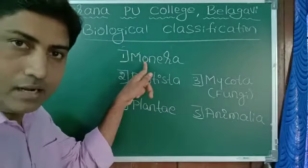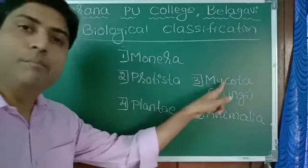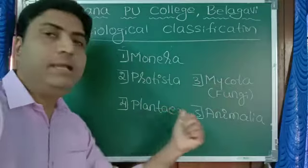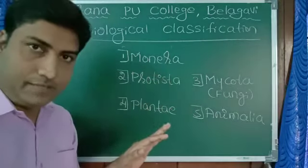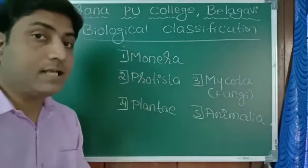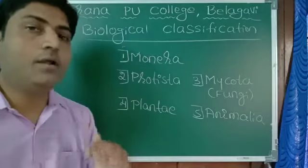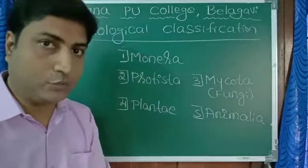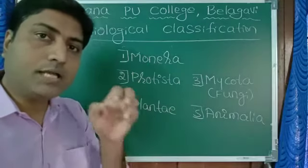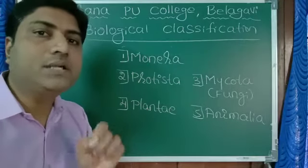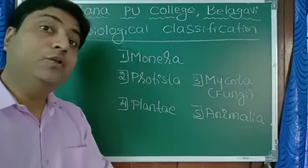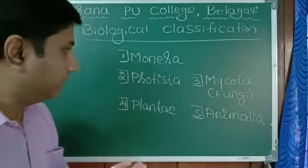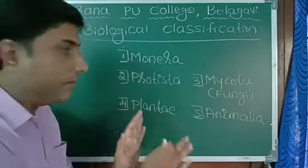These are the five kingdoms. I repeat: Monera, Protista, Mycota, Plantae, Animalia. Out of these five, in the previous class, we studied that organisms are categorized as prokaryotes and eukaryotes.